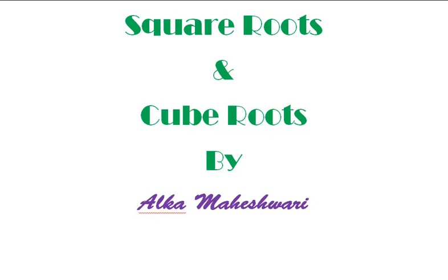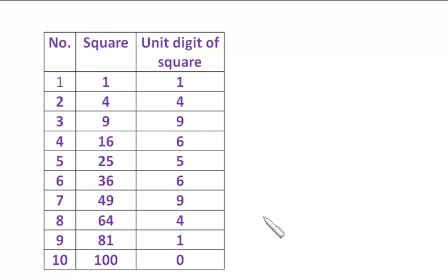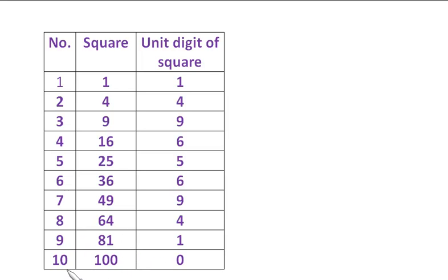To apply the techniques, we must memorize the numbers and their squares up to 10. The square of 1 is 1, square of 2 is 4, square of 3 is 9, square of 4 is 16, square of 5 is 25, square of 6 is 36, square of 7 is 49, square of 8 is 64, square of 9 is 81, and square of 10 is 100.